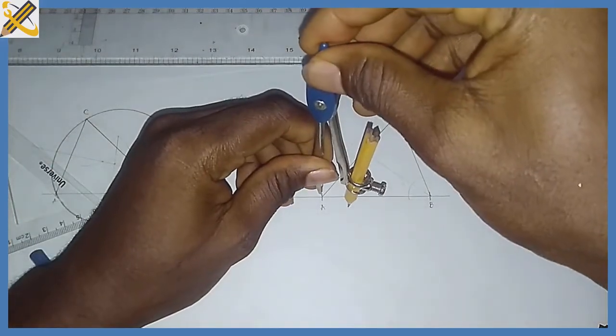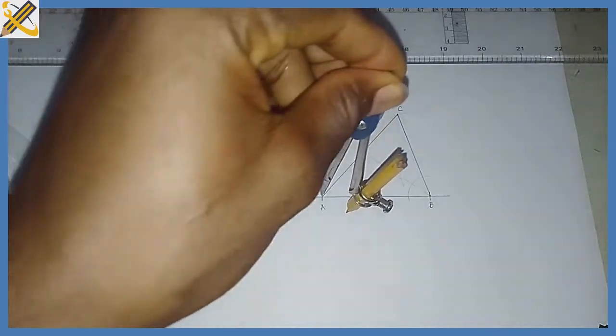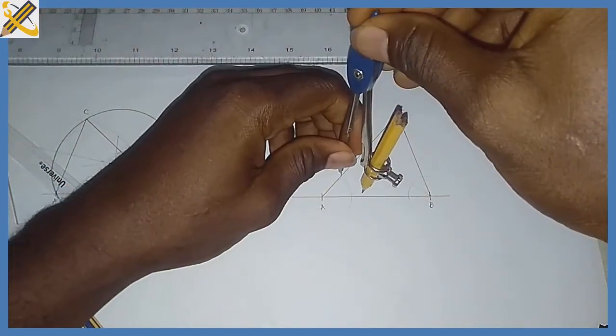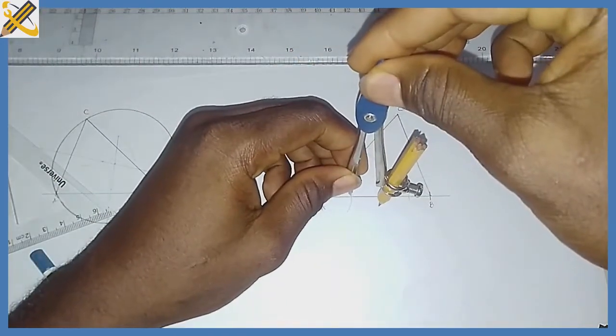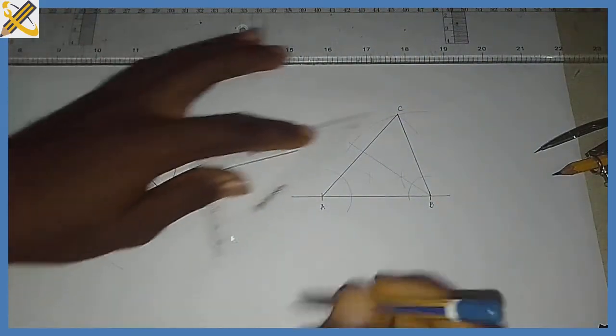So bisecting point A, the angle at point A. I've created the angle, then I'm going to bisect that. And right in that manner also.